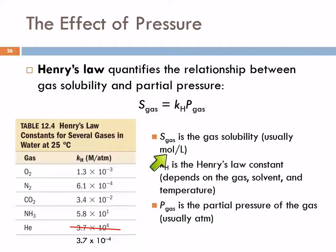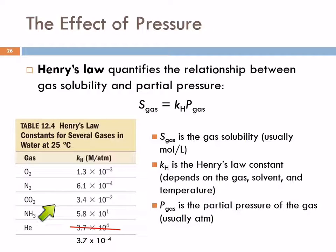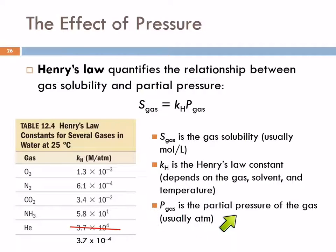Gas solubility is usually expressed in moles per liter. The Henry's law constant depends on the individual gas, the solvent, and the temperature. These values are given for several different gases in water at 25°C. The unit in this table is molarity per atmosphere (mol/L·atm), and the partial pressure is in atmospheres.